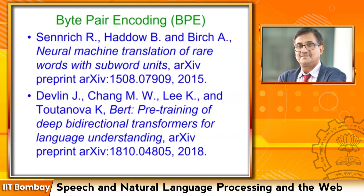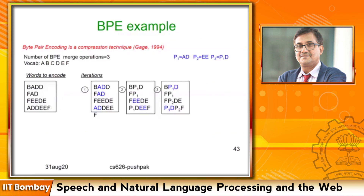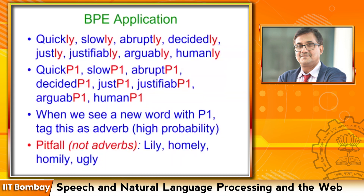A very convenient process of breaking a word into parts, or taking very frequent substrings of words, is byte pair encoding (BPE), found to be very useful in NLP — it was useful in speech recognition and is now useful in NLP. Words like quickly, slowly, abruptly, decidedly, justly, justifiably, arguably, humanly all end with '-ly'. If all these '-ly' words appear in the corpus, 'ly' will be a frequent substring. The BPE algorithm will immediately latch on to 'ly', give it a symbol — say P1 — and store it in the dictionary.